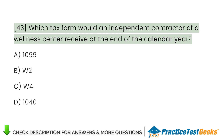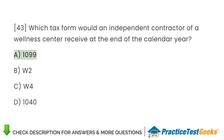Which tax form would an independent contractor of a wellness center receive at the end of the calendar year? A. 1099. B. W-2. C. W-4. D. 1040.